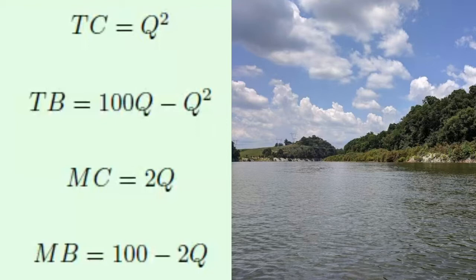We can think on the margin mathematically and get to the optimal decision much quicker. Just below the total cost and total benefit functions, you'll also see marginal cost and marginal benefit functions. For those with a calculus background, marginal cost and marginal benefit are simply the derivatives of total cost and total benefit with respect to Q. Marginal cost equals 2Q, and marginal benefit equals 100 minus 2Q. These are the functions we use to find what is optimal.